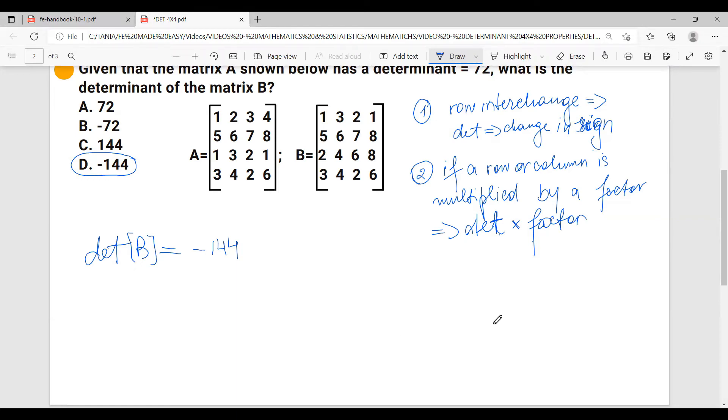In this case, determinant of matrix B equals to minus 144, and the correct answer is D.